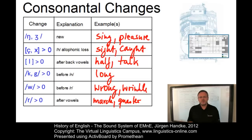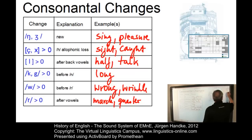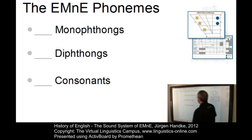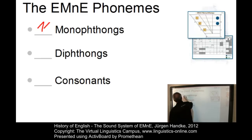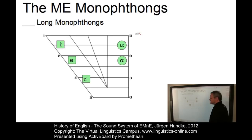This is an overview of the main changes that mark the transition from Middle English to Early Modern English. Let us now look at the Early Modern English phonemes in detail. Early Modern English had 11 monophthongs, 3 diphthongs, and 24 consonants. Let's start with the monophthongs.